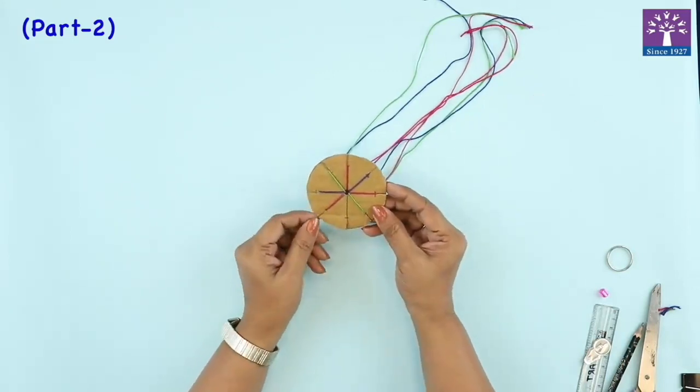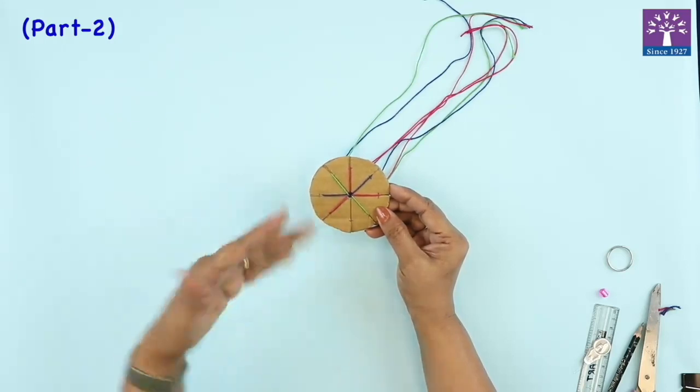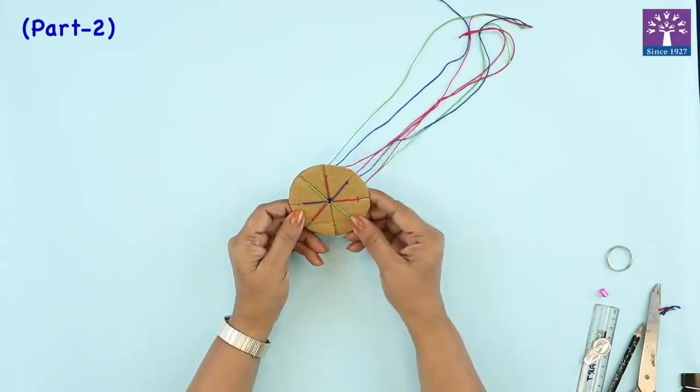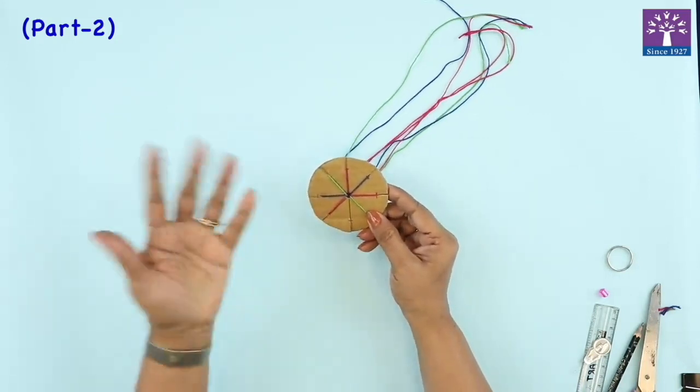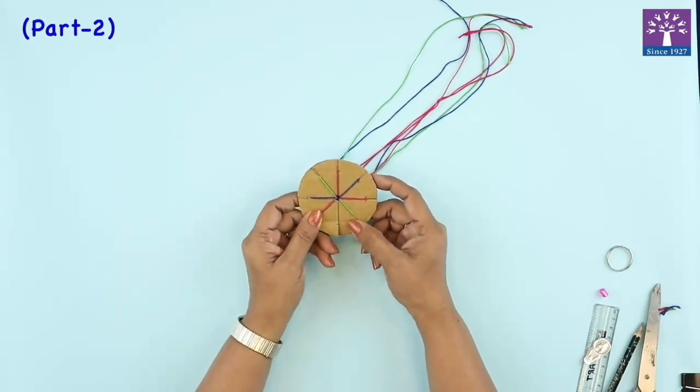Now we'll start weaving. We will start weaving from the left hand side, or if you want you can start from the right hand side. It is up to you. I will start weaving from my left hand side. The slit which is empty is facing towards me.